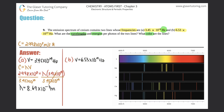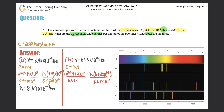Now doing the same thing for B: c equals wavelength times frequency, so 2.998 times 10 to the 8th equals wavelength times 6.53 times 10 to the 14th. Dividing by 6.53 times 10 to the 14th gives a wavelength for B of 4.59 times 10 to the negative 7th meters.